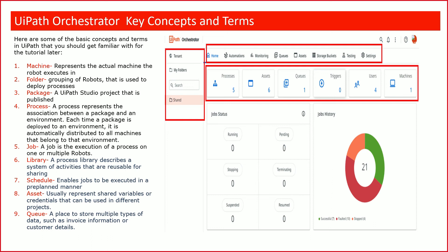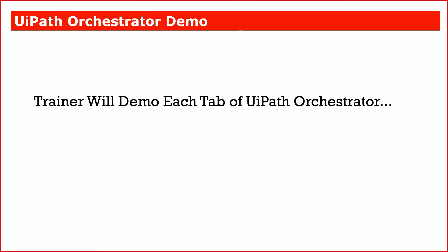The final concept is Queue. A queue is nothing but a placeholder where we can put data that needs to be processed by the bot. The ultimate goal is to distribute a workload between different robots. The advantage of storing data in a queue — compared to, say, an Excel file — is that it handles concurrency locking, status tracking, reporting, and other things automatically, giving you a ready-made solution rather than requiring you to write and manage all that code yourself.